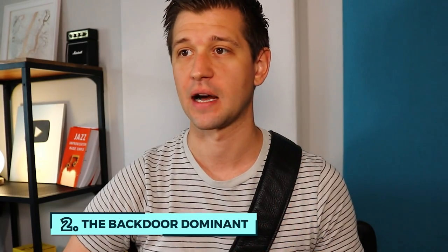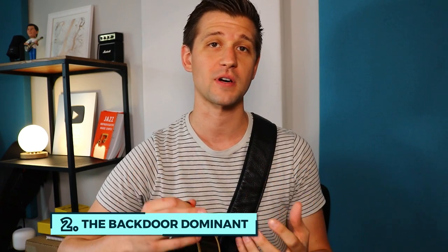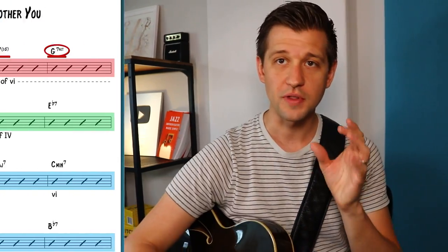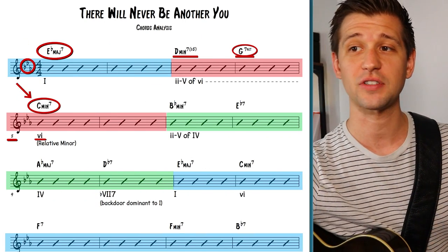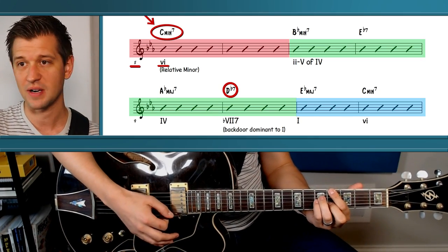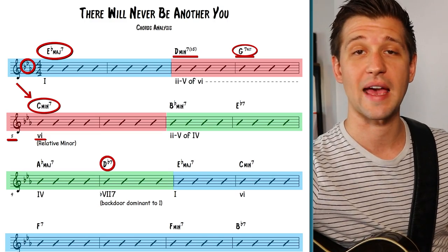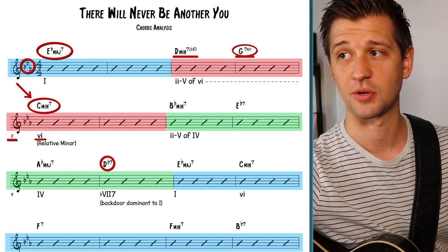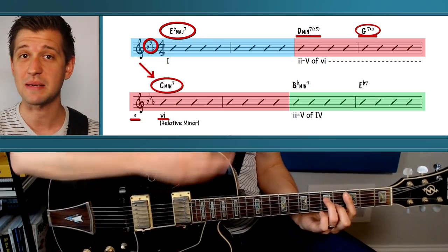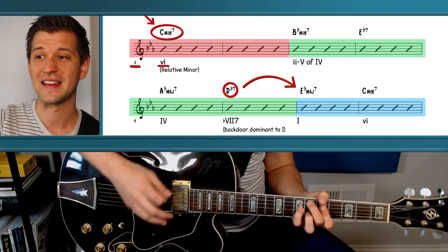The second music theory concept is another dominant seventh chord called the back door dominant. This comes up quite a bit, and in 'There'll Never Be Another You' we see it in bar 10. We have a resolution to A flat major, and then we have a D flat seven. When analyzing a dominant seventh chord, look at where it resolves. Just like G7 resolved to C minor seven as a secondary dominant, this D flat seven resolves to E flat major seven.